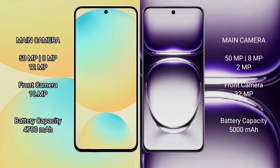Samsung Galaxy S24 FE features a triple rear camera setup: 50MP plus 10MP plus 12MP, and a front camera of 10MP. Oppo Reno 12 also has a triple rear camera setup: 50MP plus 8MP plus 2MP, and a front camera of 32MP.